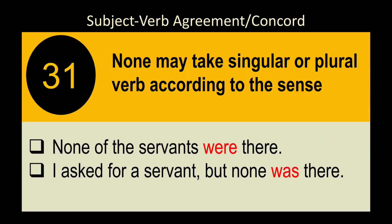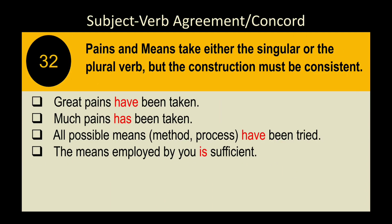Rule 33: 'None' may take either a singular or plural verb according to the sense. 'None of the servants were there' — no servant was present, plural sense. 'I asked for a servant but none was there' — I needed only one servant, singular sense. The choice depends on context.